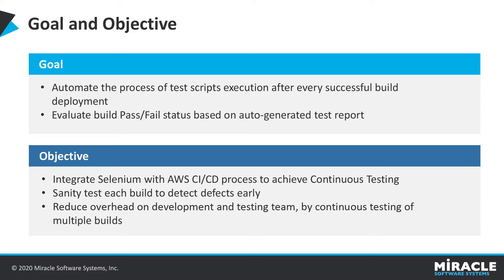Our goal is to automate the process of test script execution after every successful UI build deployment, and to evaluate build pass or fail status based on an auto-generated test report. The objectives are: sanity test each build to detect defects early, integrate Selenium with the AWS CI/CD process to achieve continuous testing, and reduce overhead on development and testing teams by continuously testing multiple builds.